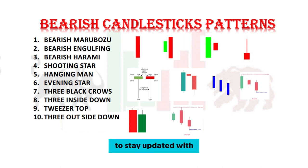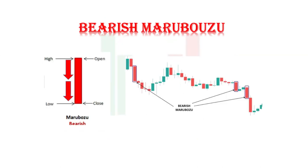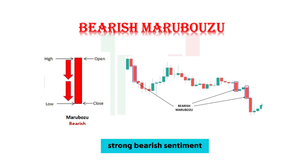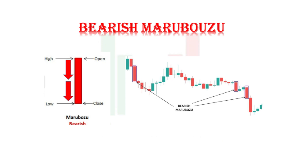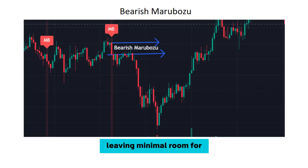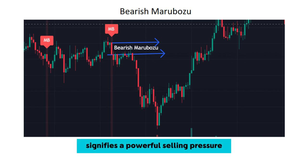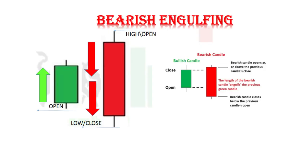First on our list is the bearish Marabozoo. Picture a long red candlestick with little to no wicks. This pattern indicates a strong bearish sentiment throughout the trading session — sellers have dominated, leaving minimal room for the bulls to fight back. As you can see on the chart, the bearish Marabozoo signifies powerful selling pressure, potentially hinting at a continuation of the downtrend.